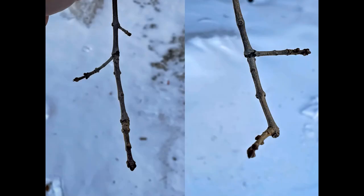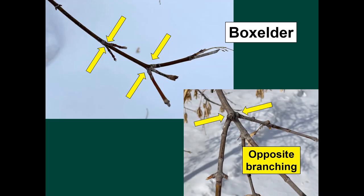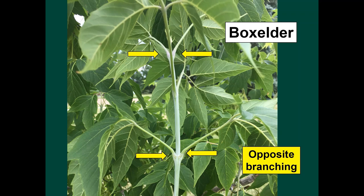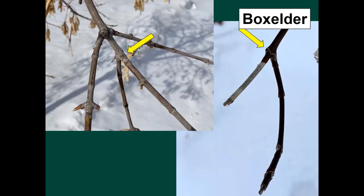Except when they aren't — sometimes buds will die over the winter and branches can break off as well. So the opposite arrangement is what is normal and most common, but it doesn't always occur. Green ash is most commonly confused with box elder. Both share a number of common characteristics: box elder also has opposite branching, and that opposite arrangement also occurs in the buds and therefore the leaves as well. The same exceptions apply — branches and buds can die or break off, resulting in branching that doesn't fit the model of opposite.